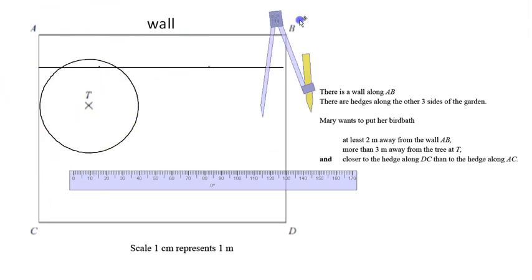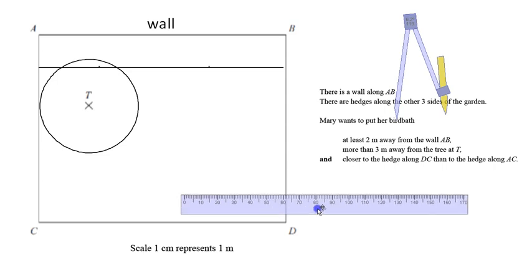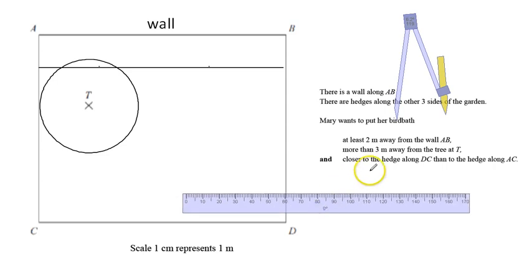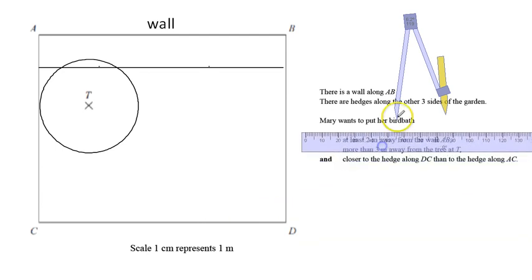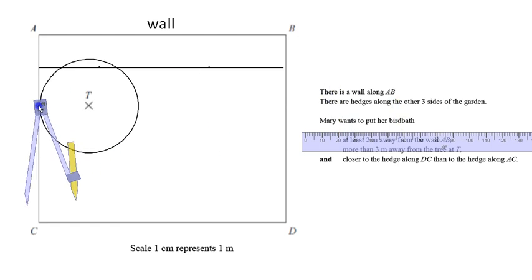So it's not allowed to be within there, and then the last bit says closer to the hedge DC, so that's this little bit along the bottom, so closer to here than AC. So I need to find exactly where it's halfway between those two walls, and then I need to be on the bottom side of that, so closer to DC, so then I need to construct the angle bisector.